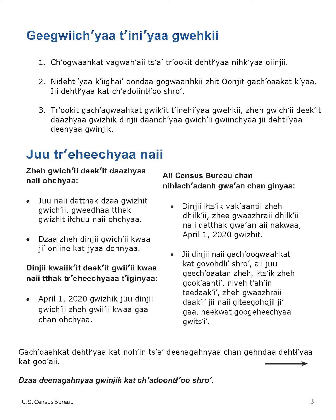Before you begin: number one, find your questionnaire and open it to the first page. Two, use the information in this guide to mark your responses on the English paper questionnaire. Do not write your answers on this guide. Before you answer the question, count the people living in this house, apartment, or mobile home using the guidelines below.